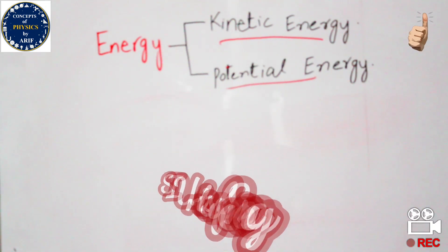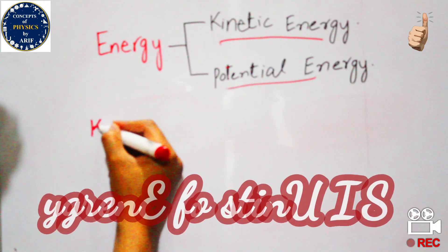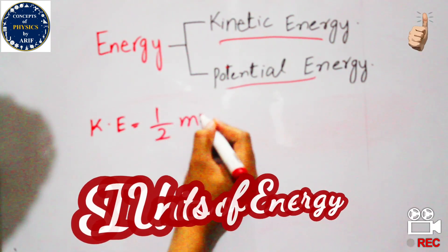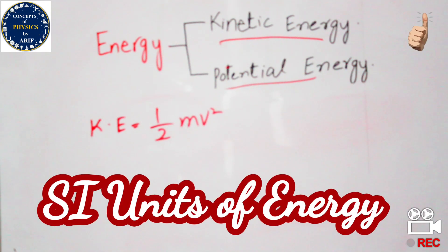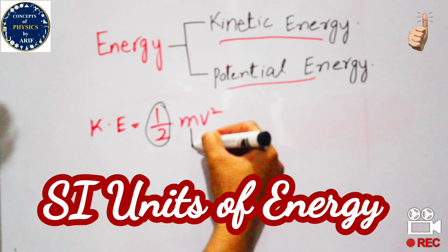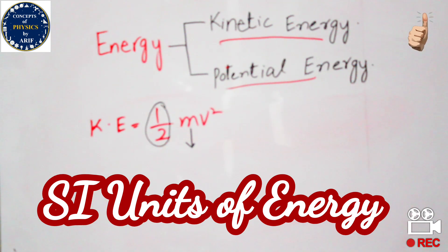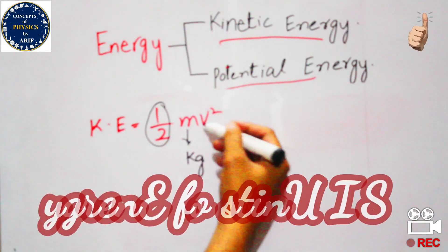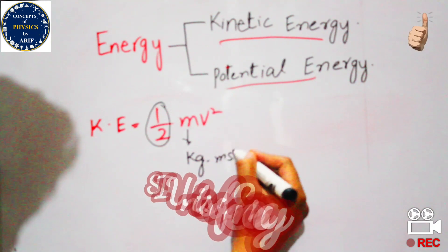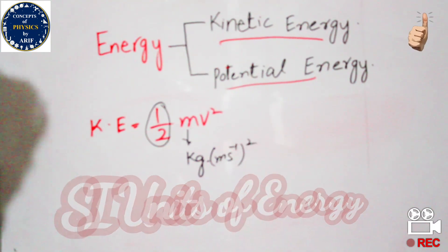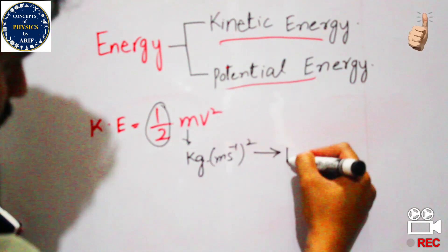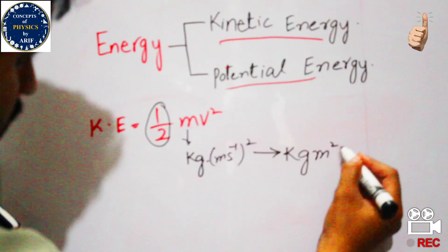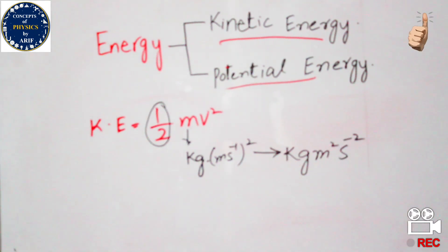Now we will extract the units from the formulas. The formula for kinetic energy is one-half mv squared. The constant one-half is not included in the units. Mass has units of kilograms, velocity has units of meters per second, and squaring it gives kilogram meter squared per second squared.